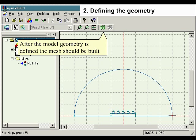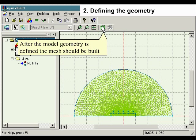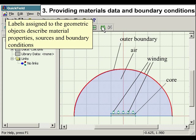After the model geometry is defined, the mesh should be built. Providing Materials Data and Boundary Conditions. Labels assigned to the geometric objects describe material properties, sources, and boundary conditions.